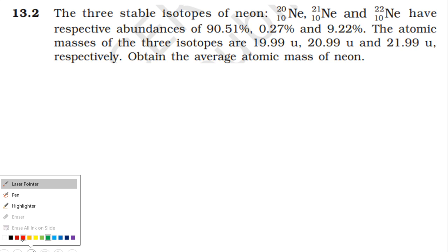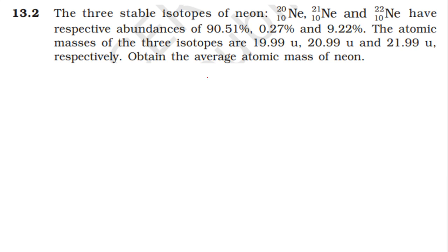First, neon-20 has abundance x1 of 90.51%. Neon-21 has abundance x2 of 0.27%. Neon-22 has abundance x3 of 9.22%.